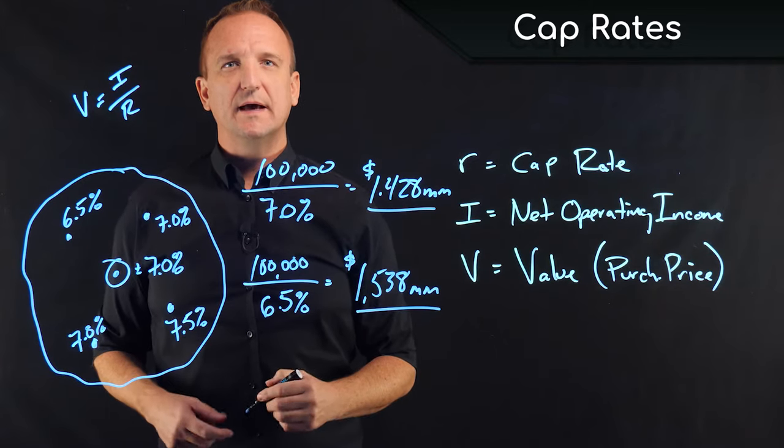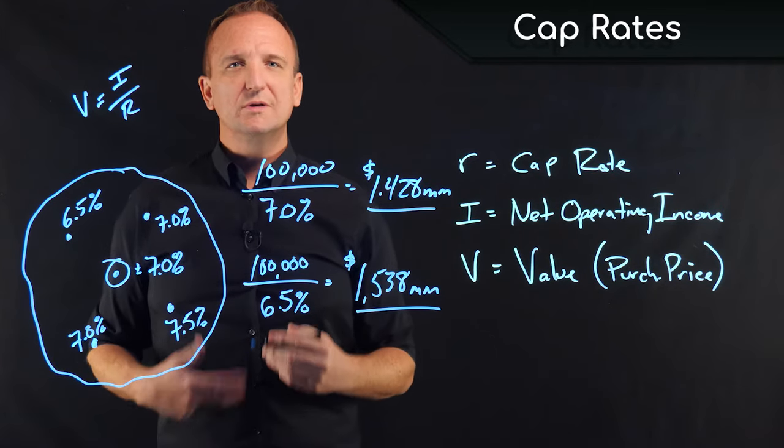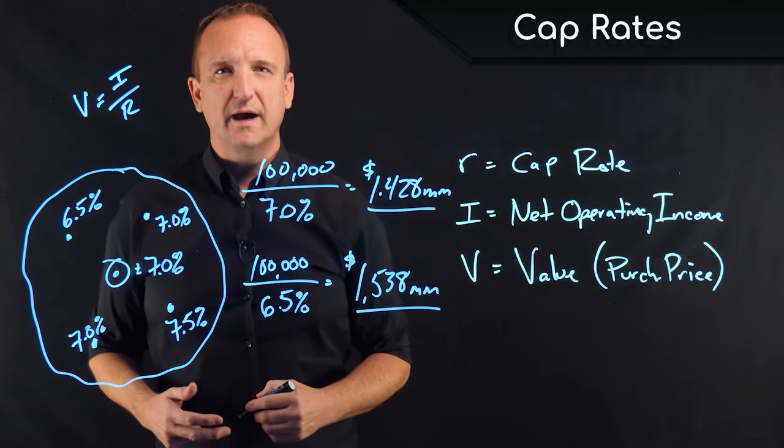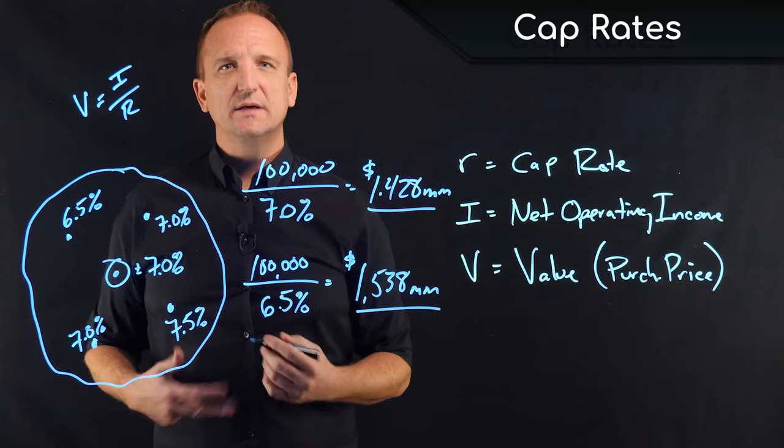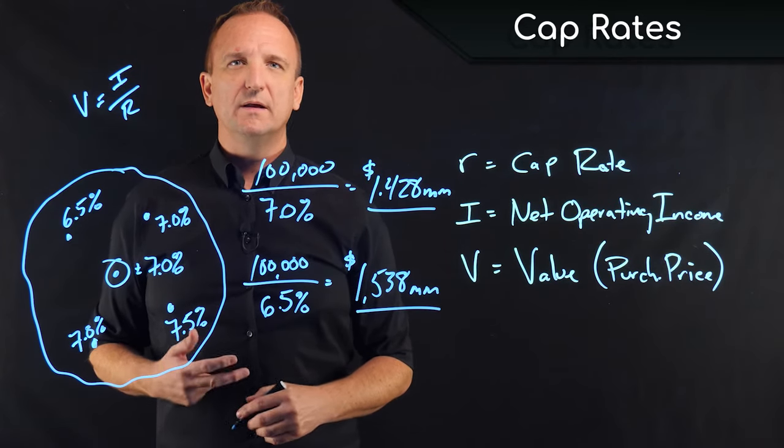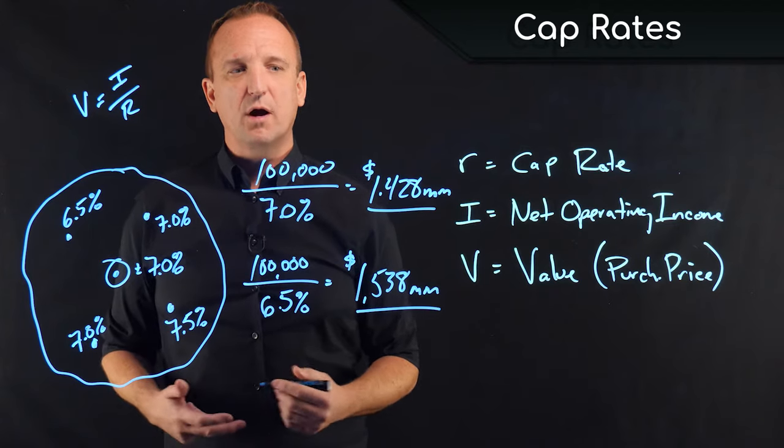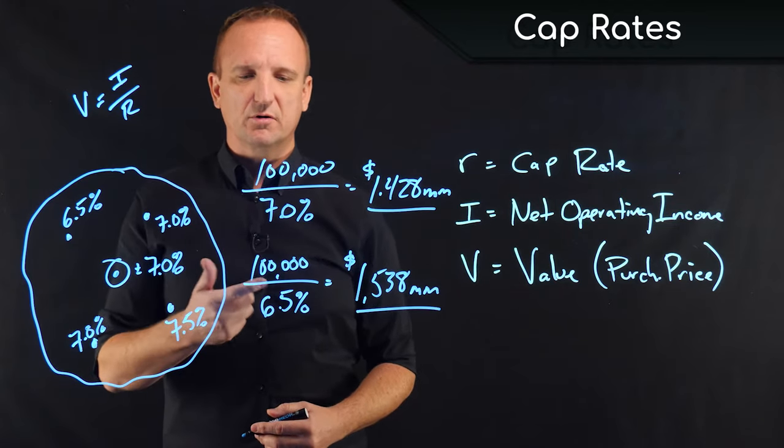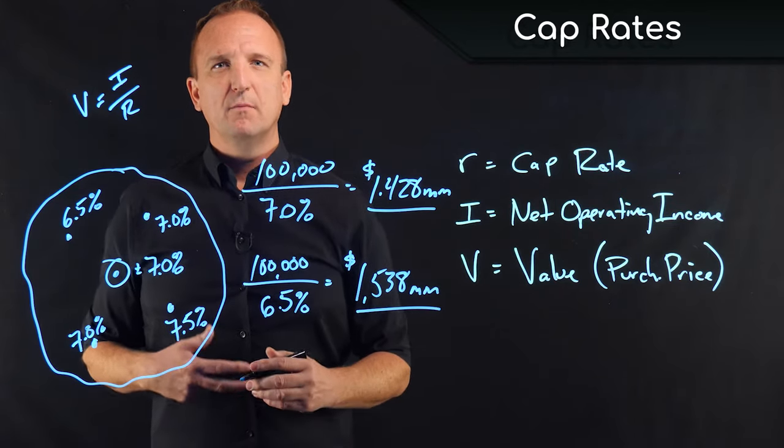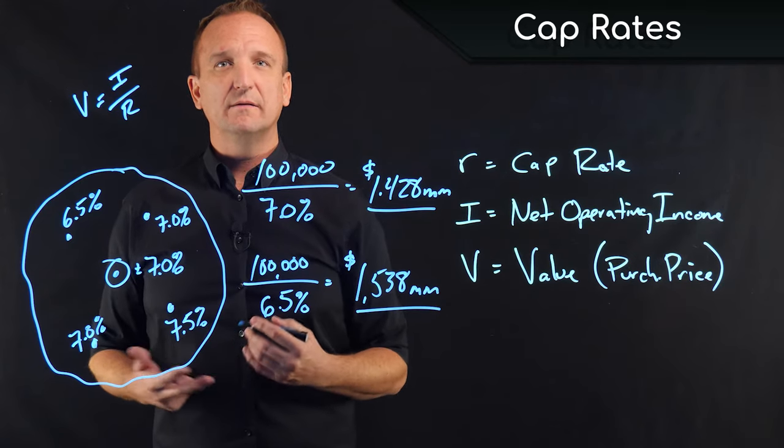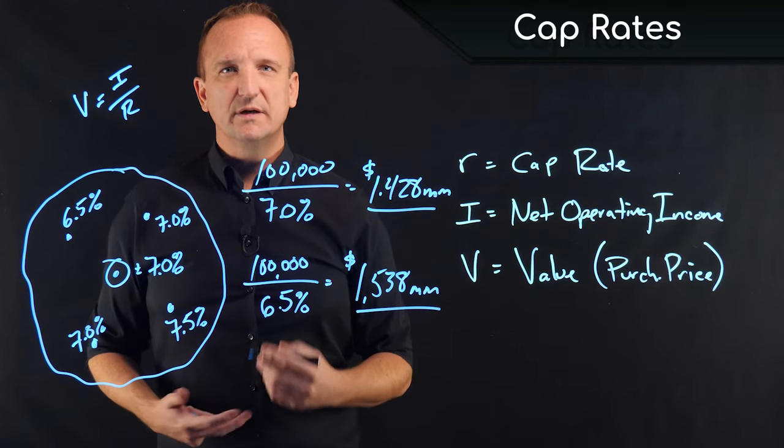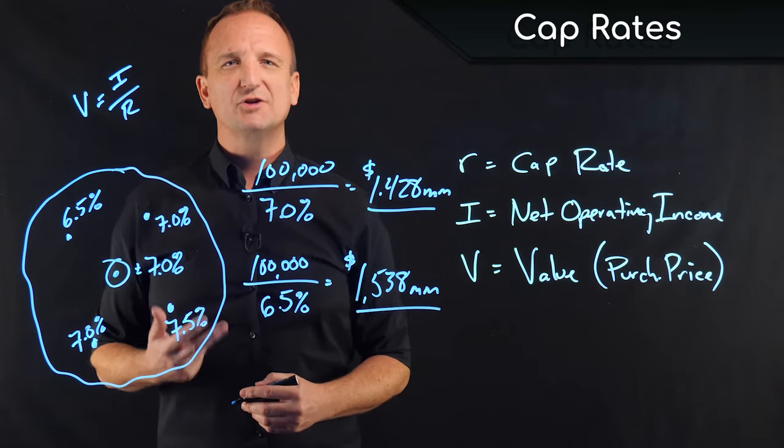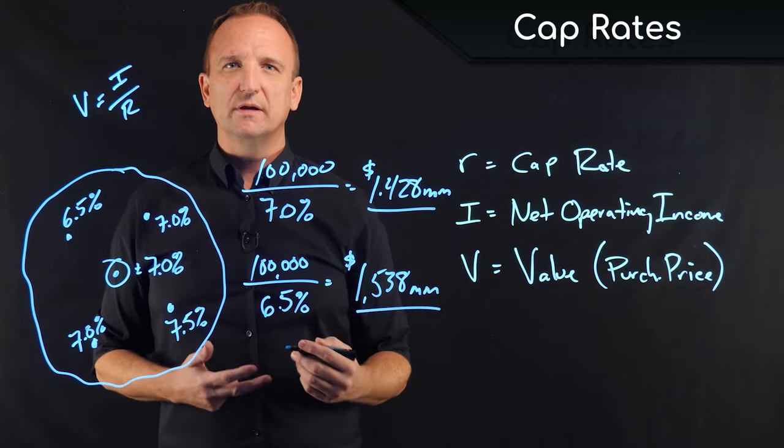Important to keep in mind is that investors don't typically buy just on cap rate. The cap rate does tell them what the unlevered performance of the property is, 7% return, 6.5% return. But after accounting for debt and leverage, the buyers are typically looking for cash on cash return rather than cap rates.